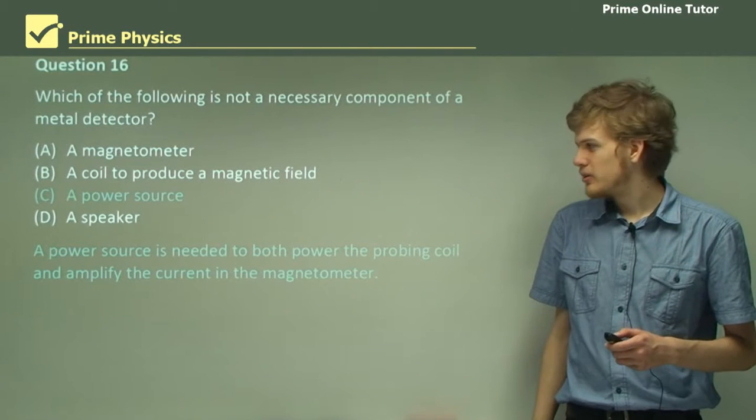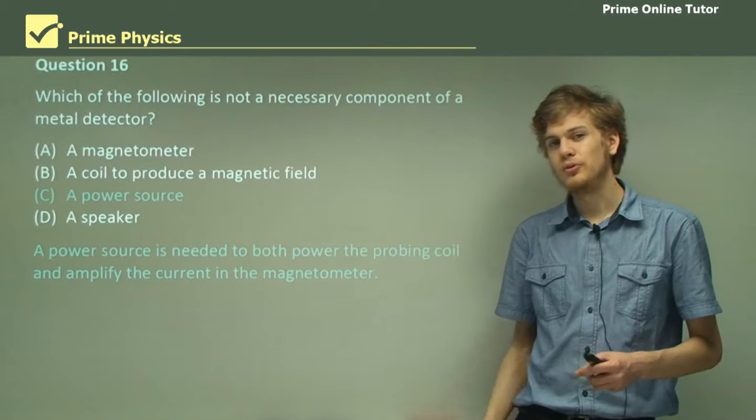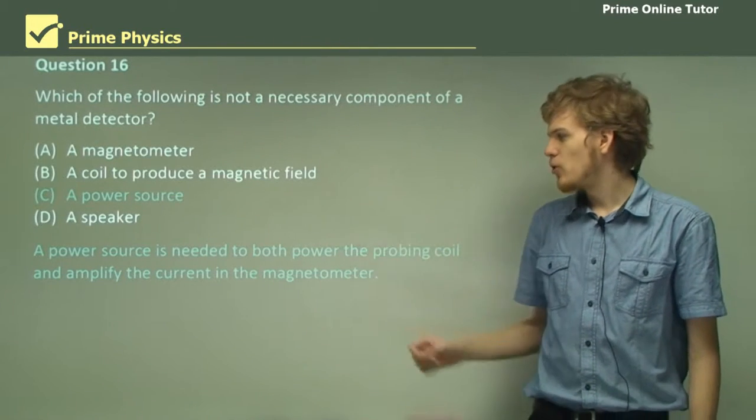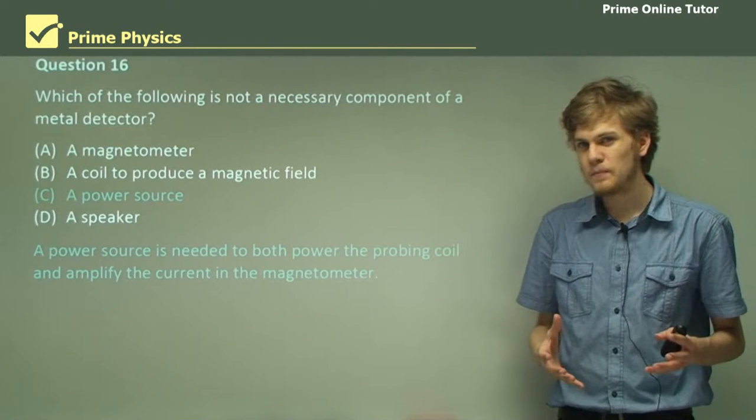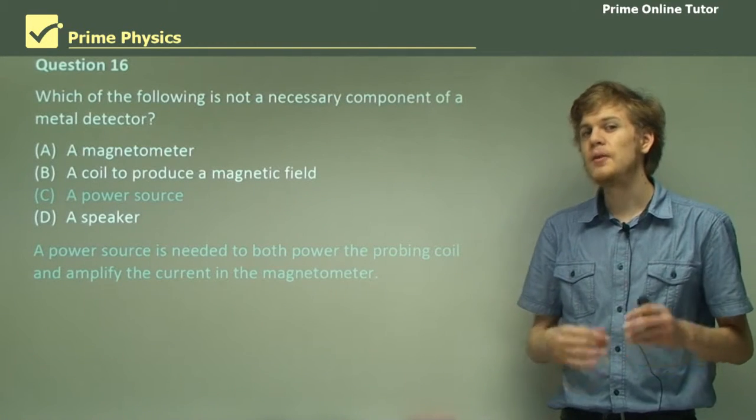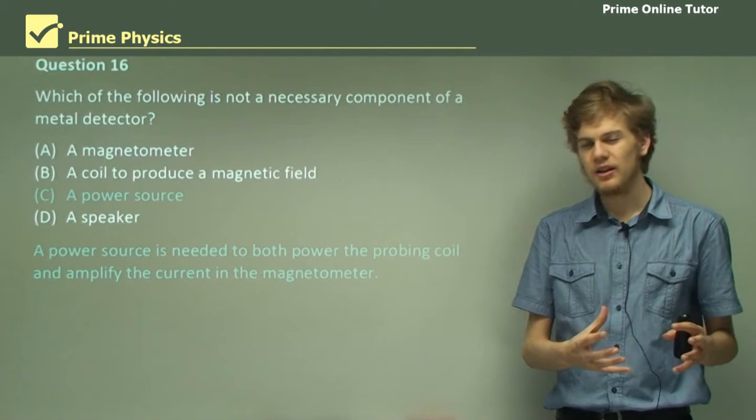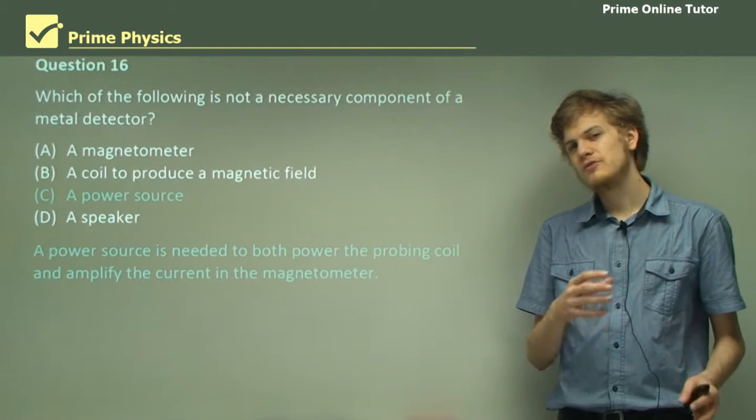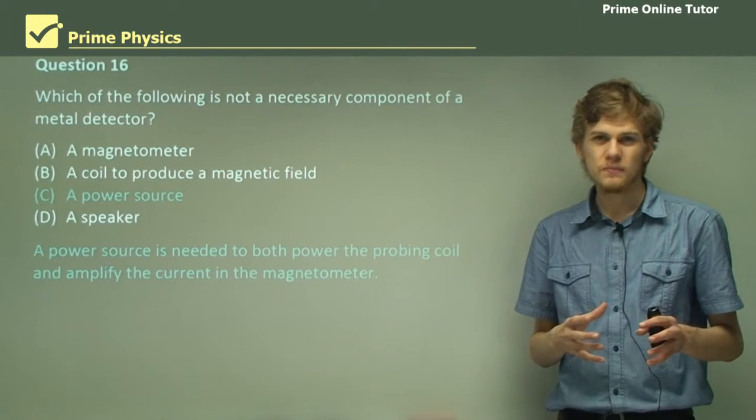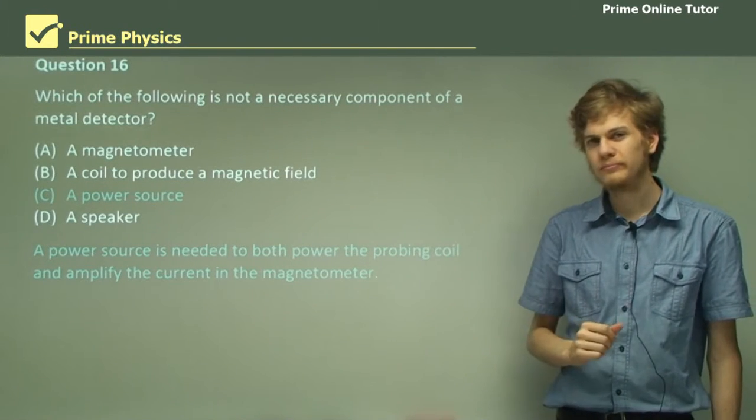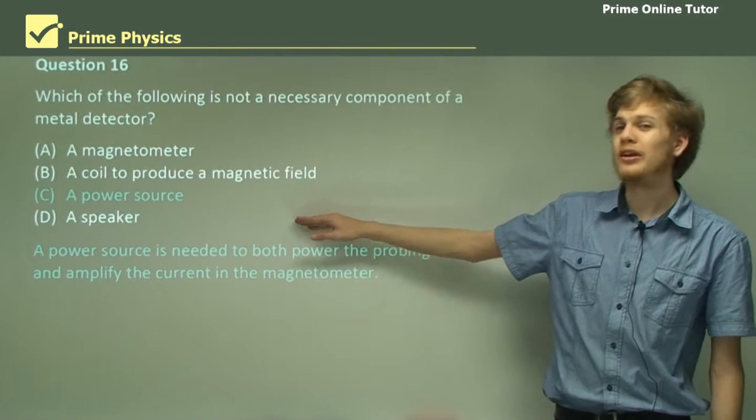Without a power source, we won't be able to produce the changing electric field, and we won't be able to notice the change. When the detecting coil, that is the magnetometer, finds a small change in the magnetic field, it's very difficult to notice. We need to amplify that change to make sure it's there at all, and of course we need a power source for that.